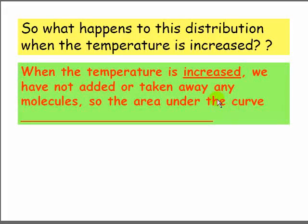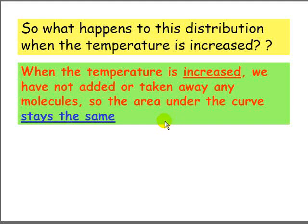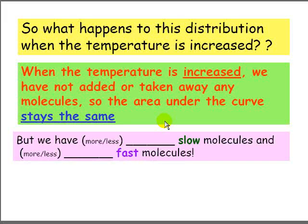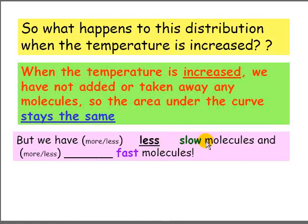When the temperature is increased, we haven't added or taken away any molecules. So the total area under the curve will stay the same. But we now have fewer slow molecules and more fast molecules.